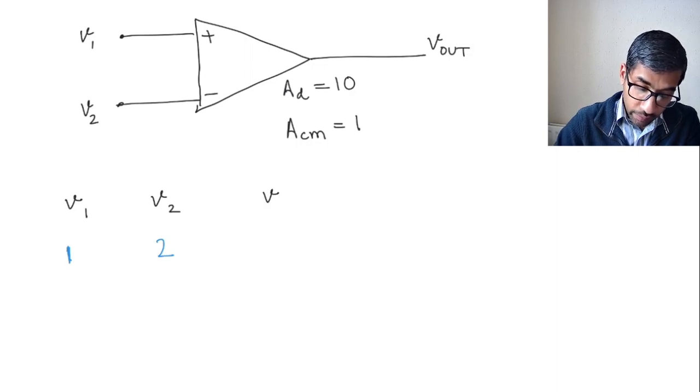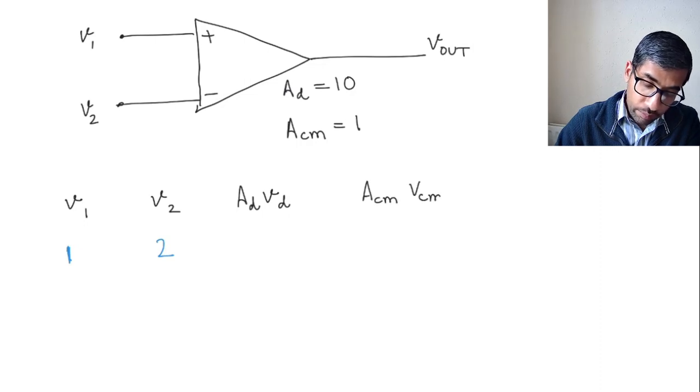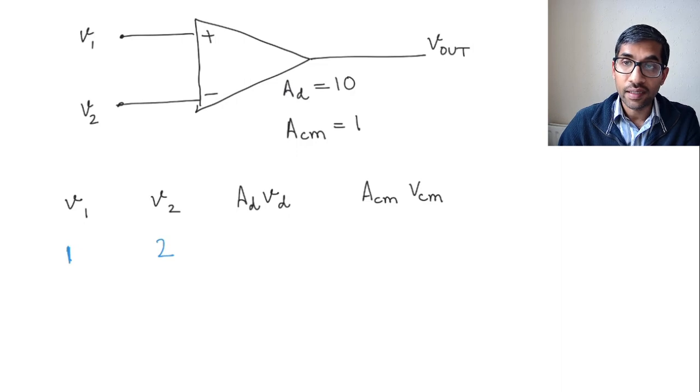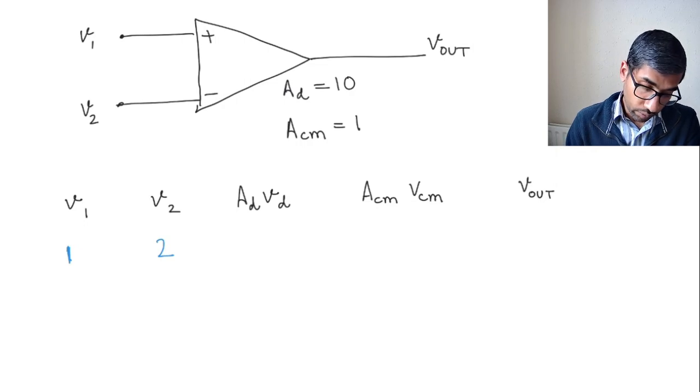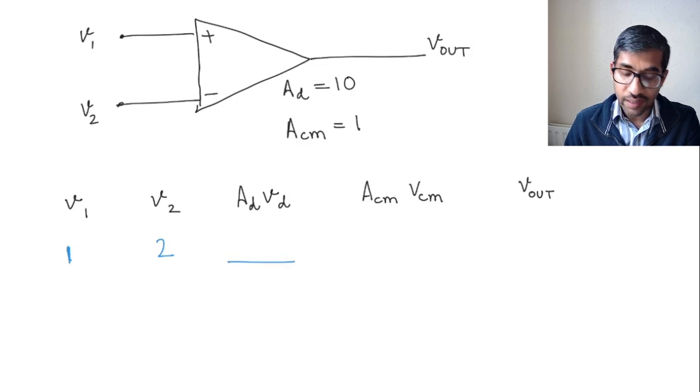To calculate the output voltage, let's calculate the output because of the differential voltage ADVD and let's calculate the output due to the common mode voltage, which would be given by ACM VCM. And let's calculate the total Vout. So let's try to do these calculations. So what is the voltage here going to be? What is ADVD going to be?